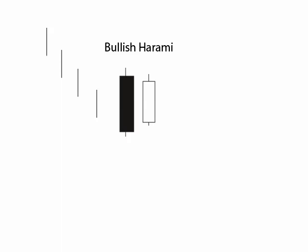Our next pattern is the bullish harami, and it is a two-candlestick pattern. It is a bullish reversal pattern. What we look for with the harami is the first candlestick in the pattern to be a continuation of the prevailing trend.